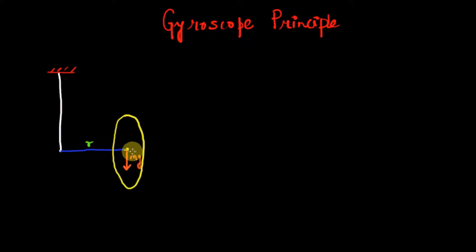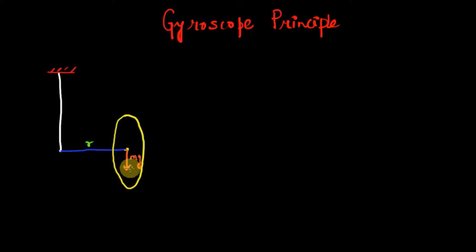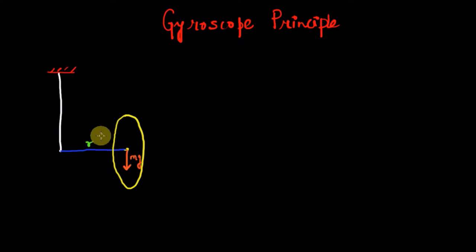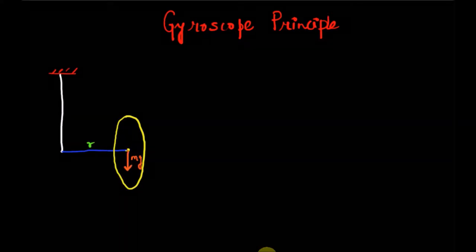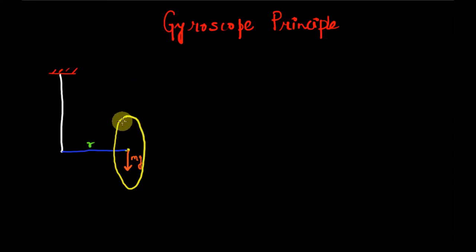Initially the disc and rod are held horizontally and then released. It's a no-brainer — the disc and rod will fall down. Why? Because the weight of the disc, mg, acts in the downward direction, and about the attachment point this weight applies a clockwise torque on the system, causing it to fall.